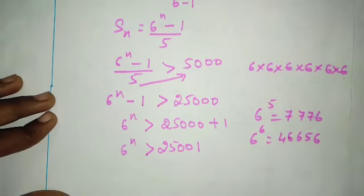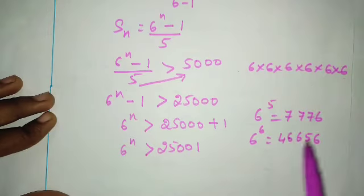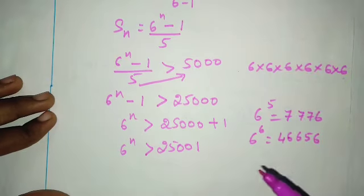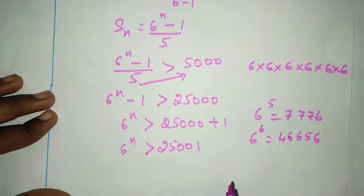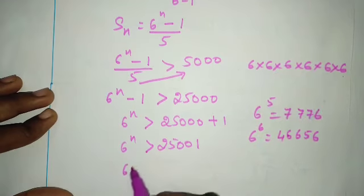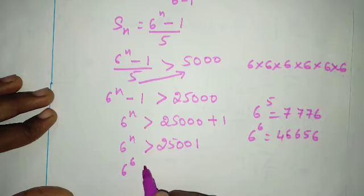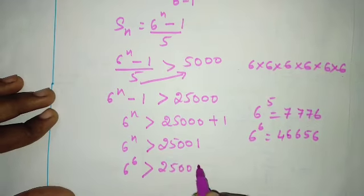6 power 6 equals 46,656. Comparing these with 25,000, we see that 6 power 6, which is 46,656, is definitely greater than 25,000.